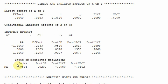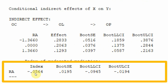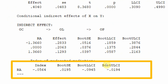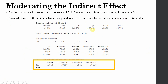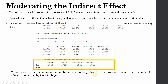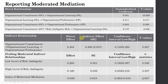The index of moderated mediation is minus 0.0564. Looking at the standard error and the lower and upper level confidence interval — there is no zero in between. This shows that there is moderated mediation, meaning the indirect effect from OC to OP through OL is being significantly moderated by role ambiguity. We can therefore conclude that the indirect effect is moderated by role ambiguity.